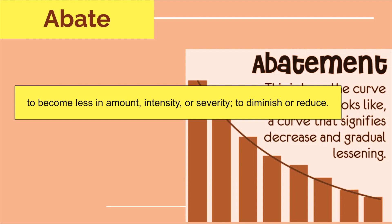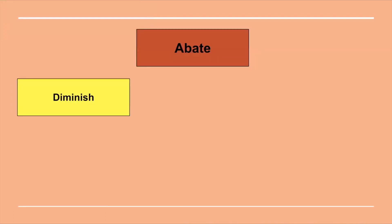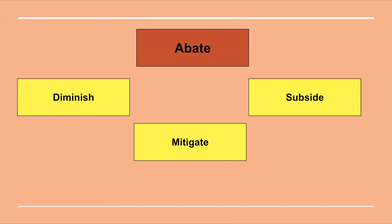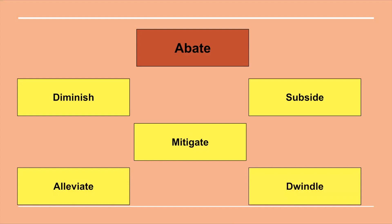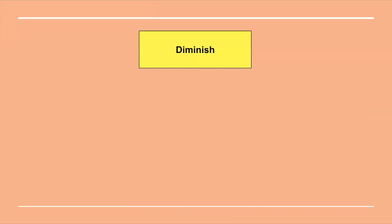Now let's see what other words have similar meaning as abate and are also GRE words: diminish, subside, mitigate, alleviate, and dwindle. Some of these words you might have come across in your life already, but we will go through all of them. We will learn their meanings and a sentence for each word. Every word in this family means to decrease in value or reduce over time.